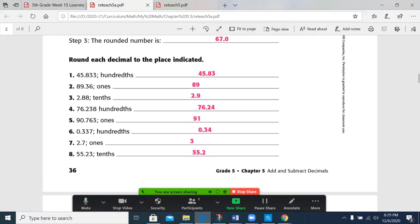To the right, made this become a 9, so 2.9. 76 and 238 thousandths, so the nearest hundredth. 3 is in the hundredths place and 8 is to its right, so that becomes a 4, 76.24. 90 and 763 thousandths, 7 makes this 0 go up to a 1, so we have 91.